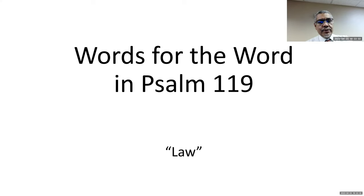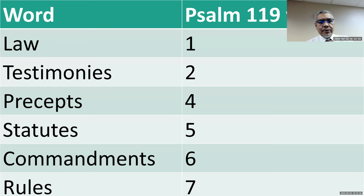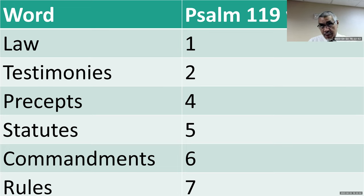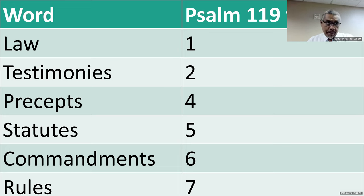Somebody pointed out that the chart is difficult, which is a good point. These are supposed to be verse numbers. The words — law, testimonies, precepts, statutes, commandments, and rules — are different words, all of which refer to basically the Bible in some form, and they occur in Psalm 119.